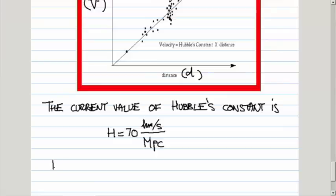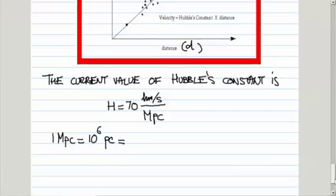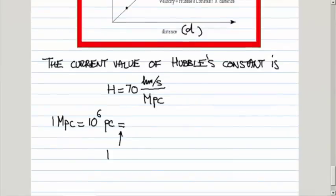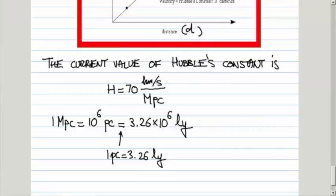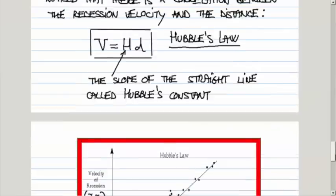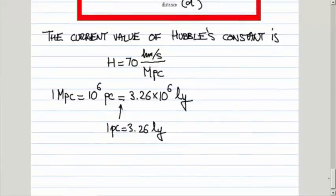One megaparsec is million parsecs, which is another unit used in astronomy to measure the distances between the stars. One parsec happens to be equal to 3.26 light-years. One megaparsec is a distance of 3.26 million light-years.